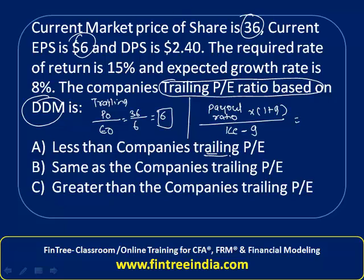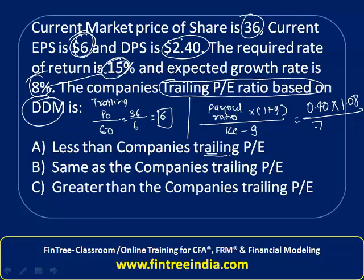Payout ratio: dividend is 2.40 and EPS is 6, which means payout ratio is 40%. Growth rate is given as 8%, so (1 plus g) equals 1.08. Cost of equity minus growth rate equals 15% minus 8%, which is 7%. So the calculation is 0.40 multiplied by 1.08, divided by 7%, which equals 6.17.